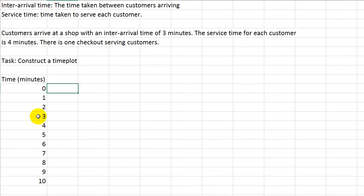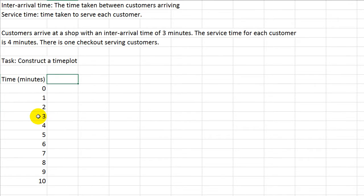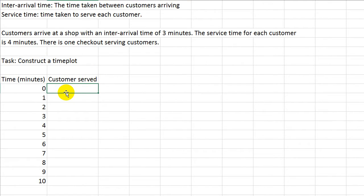Starting from the zeroth minute — what happens on the first minute, what happens on the second minute, and so on. The next column we have is 'customer served.' Basically, that's just saying who are we serving right now? We label the customers as A, B, C, D, E. The first customer we call customer A.